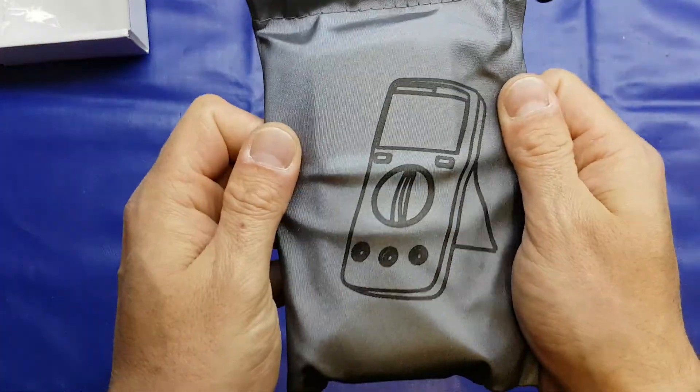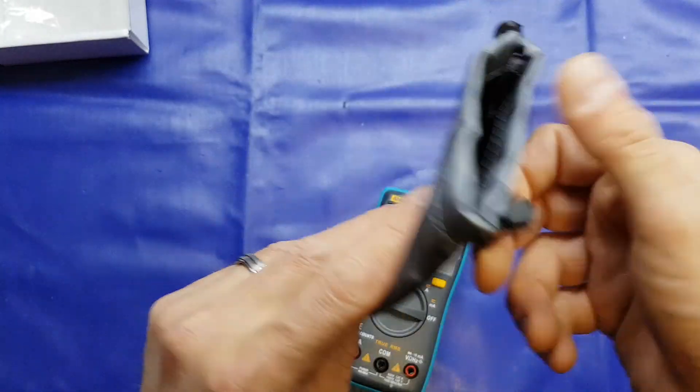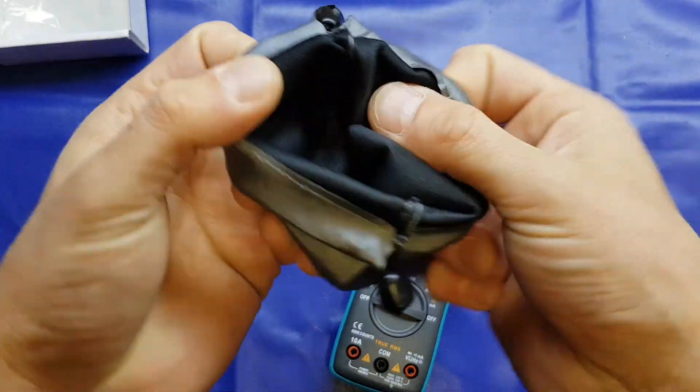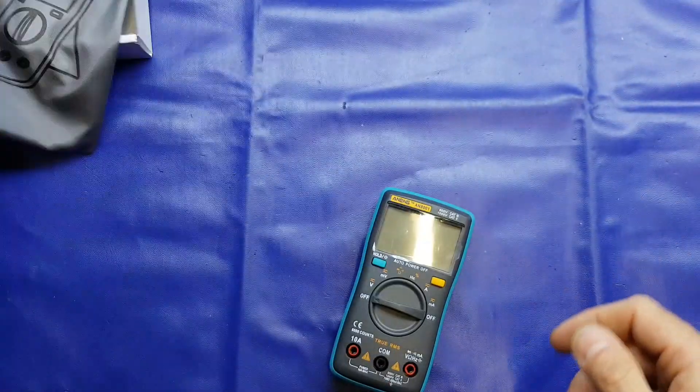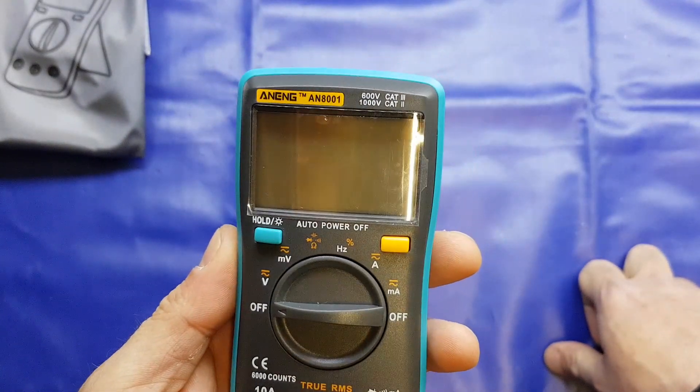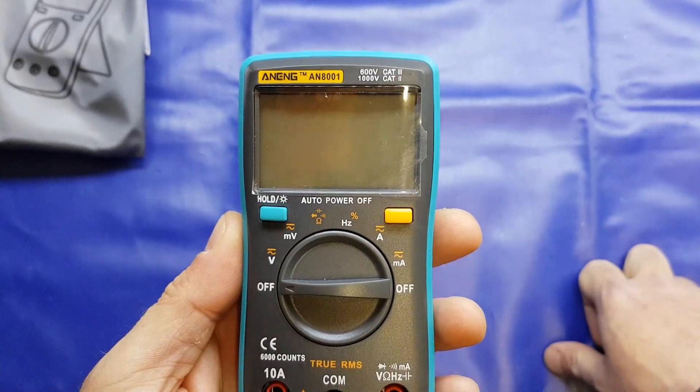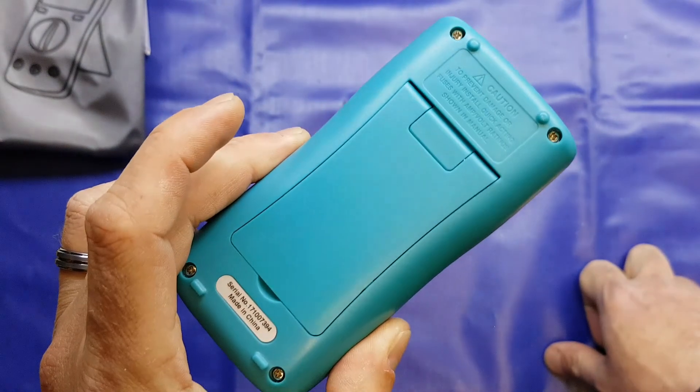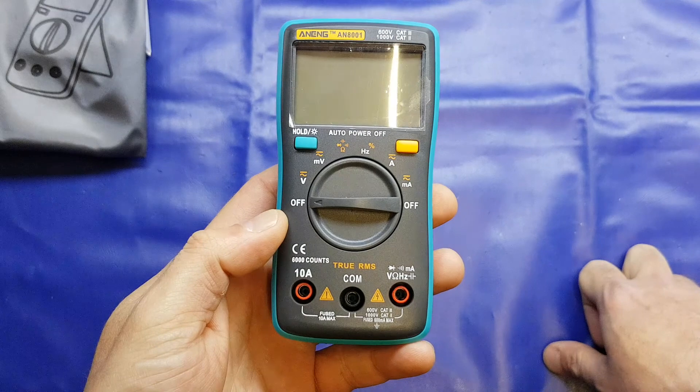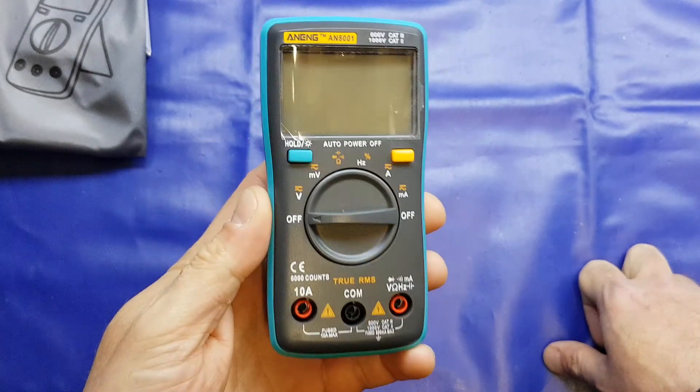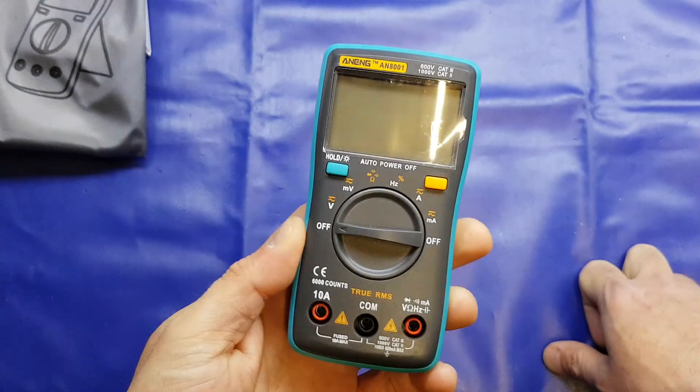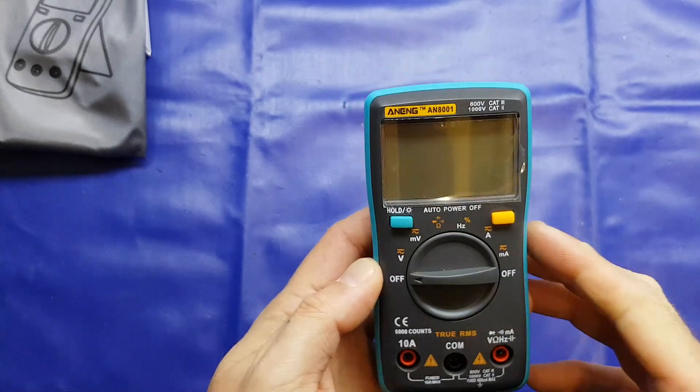So it comes in this little satin bag, it's not fleecy inside but it's going to stop it getting scratched. And here's the main event, the AN8001, it's 600 volts cat 3, 1000 volts cat 2, it is essentially a clone of the Fluke 101, from what I can see. It says 6000 counts, from what I've read that might not be accurate, but yeah we'll give it a go and see, see what it's like and see how it performs.